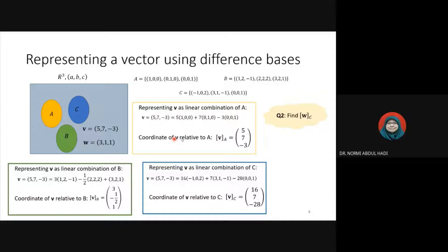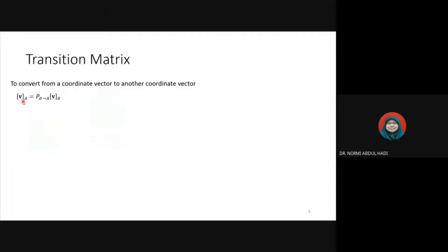For example, if we have VB and we want to find VA, we need a matrix to convert from B to A. VA can be found by multiplying VB with this matrix, which is called the transition matrix from B to A. Similarly, if we have VB and want to find VC, the transition matrix is from B to C. And if we have VC and want to find VA, the transition matrix is from C to A.